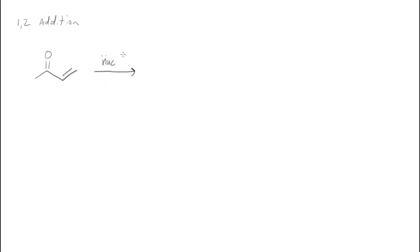So there are really two possibilities. We can get 1,2 addition where the nucleophile comes in, adds to the carbonyl, pushes that electron pair out onto oxygen, and then it gets reprotonated to recover the alcohol. So that would be a 1,2 addition.